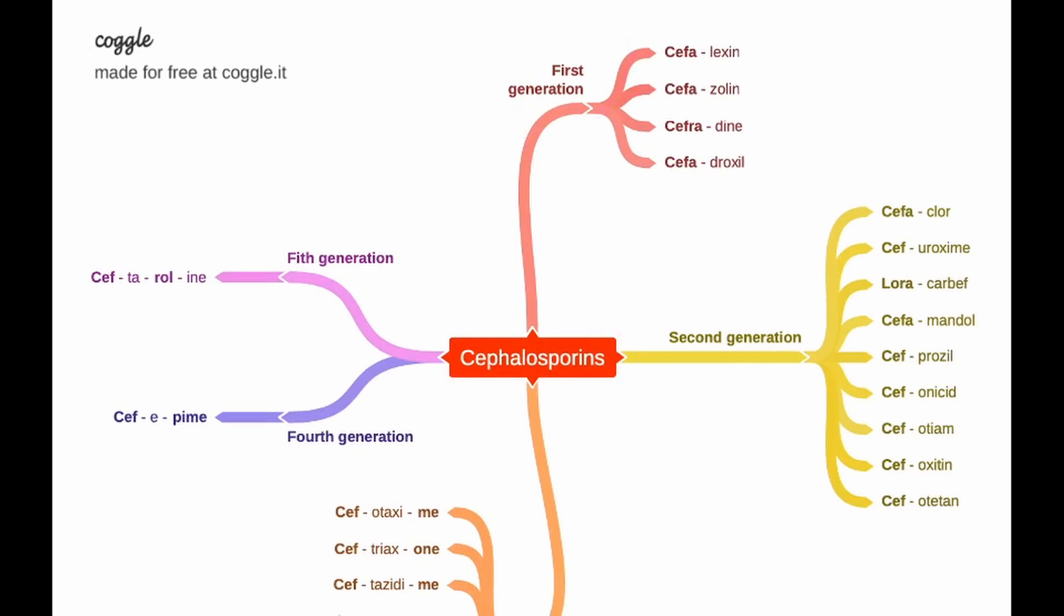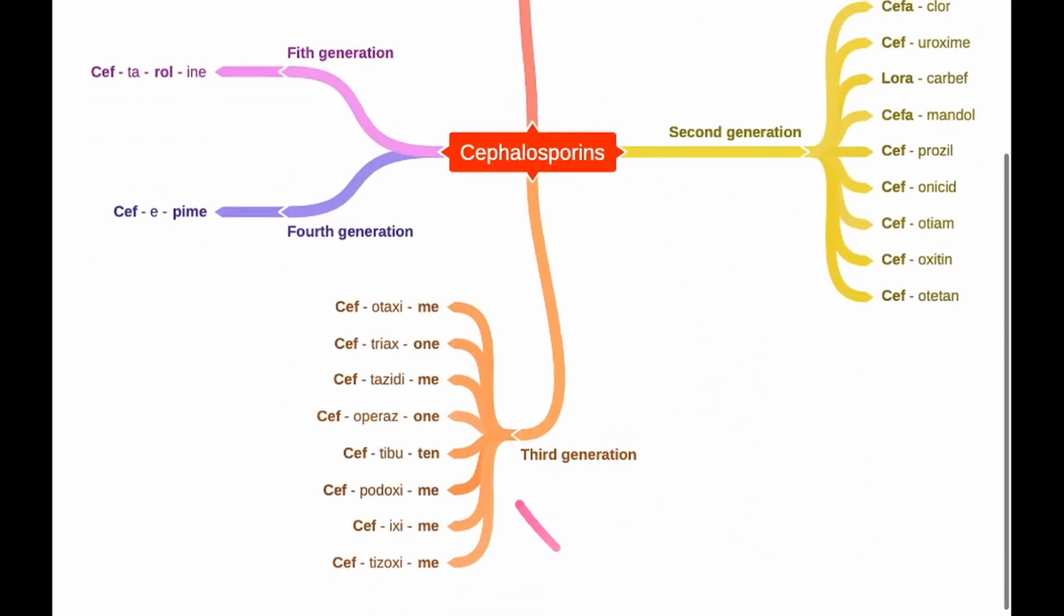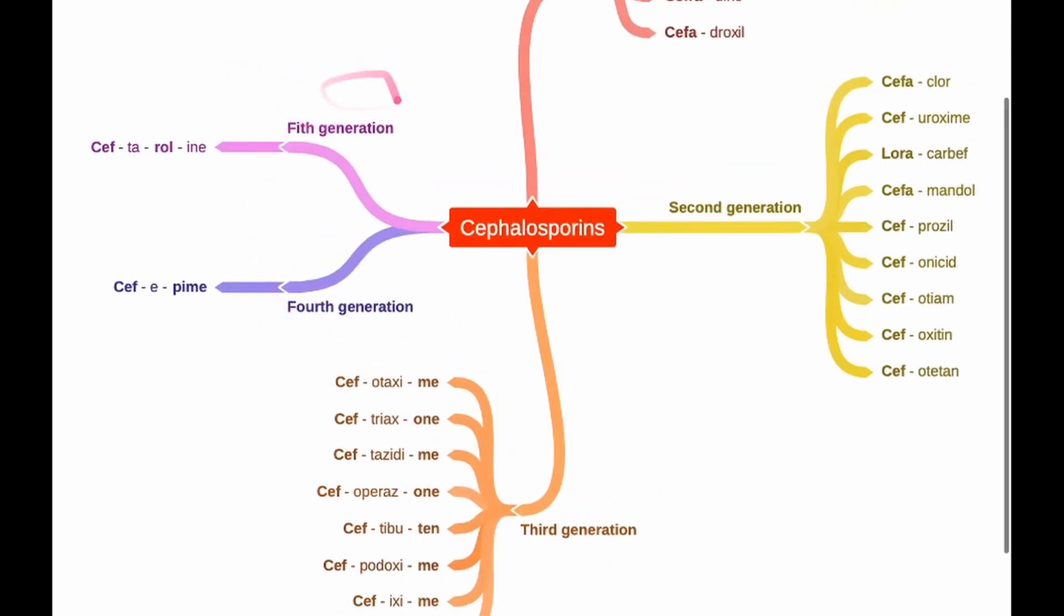In general, cephalosporins are a class of beta-lactam antibiotics. You divide them in five classes: first generation, second generation, third generation, fourth generation and fifth generation.